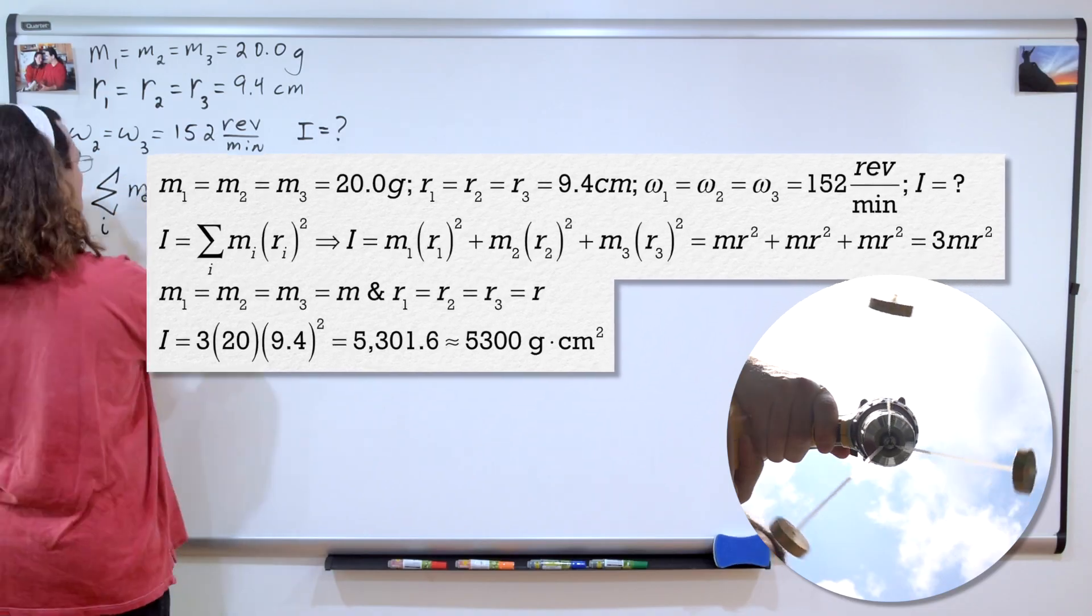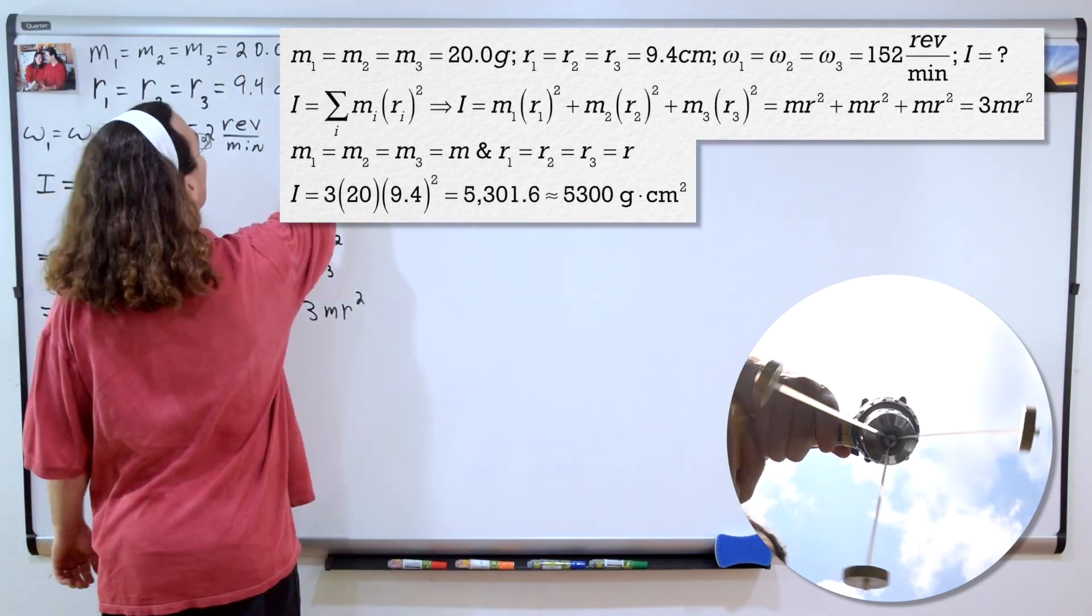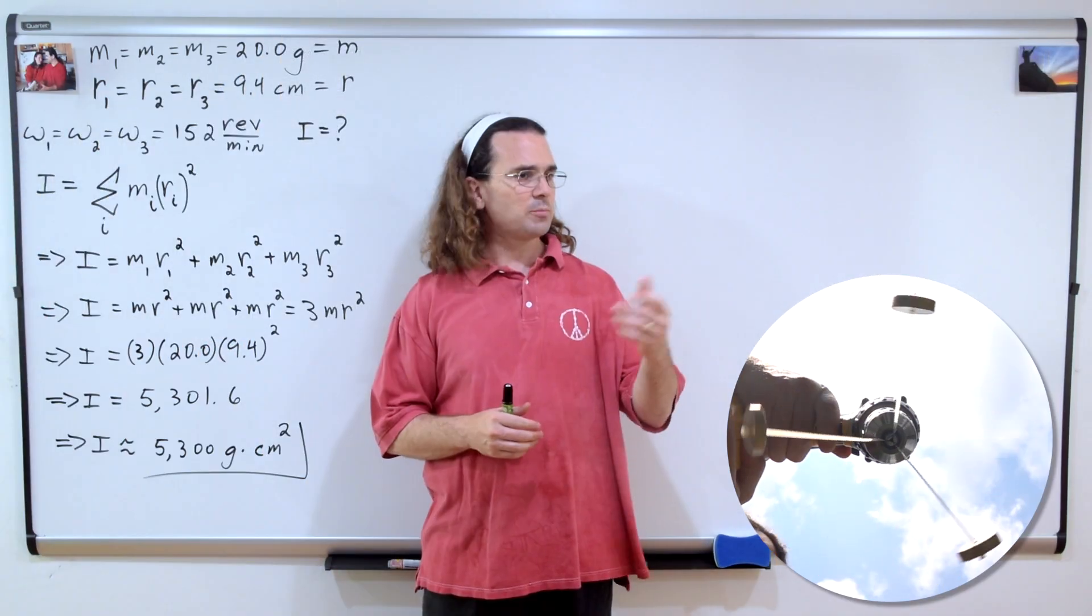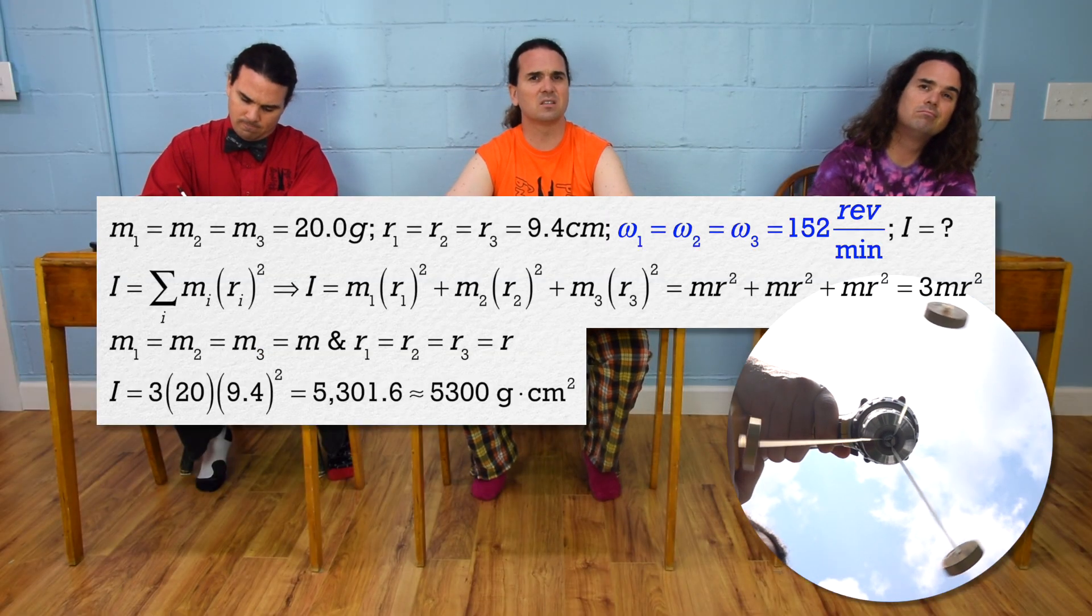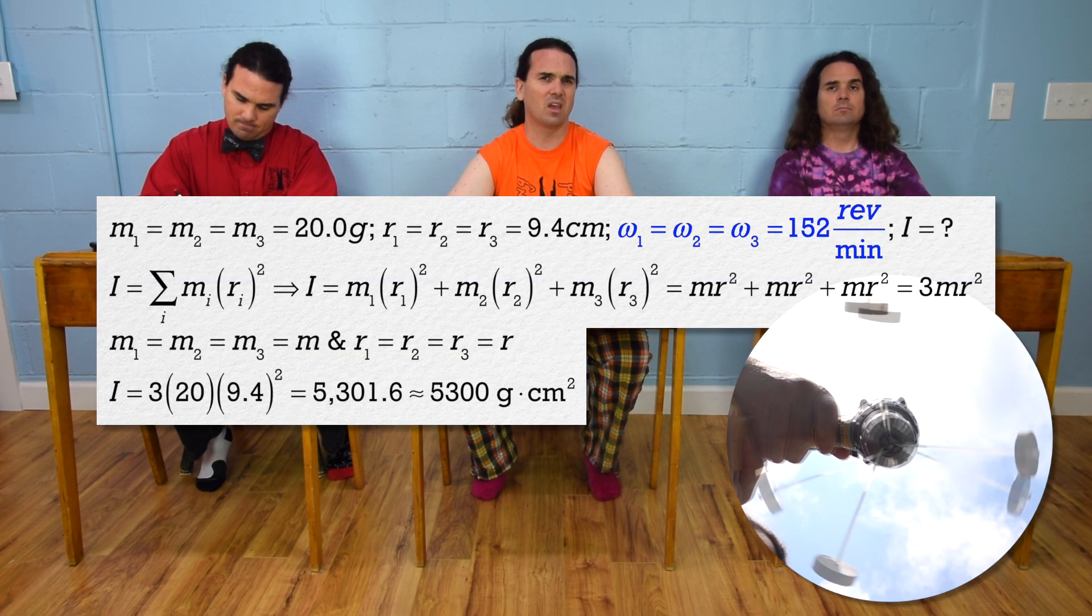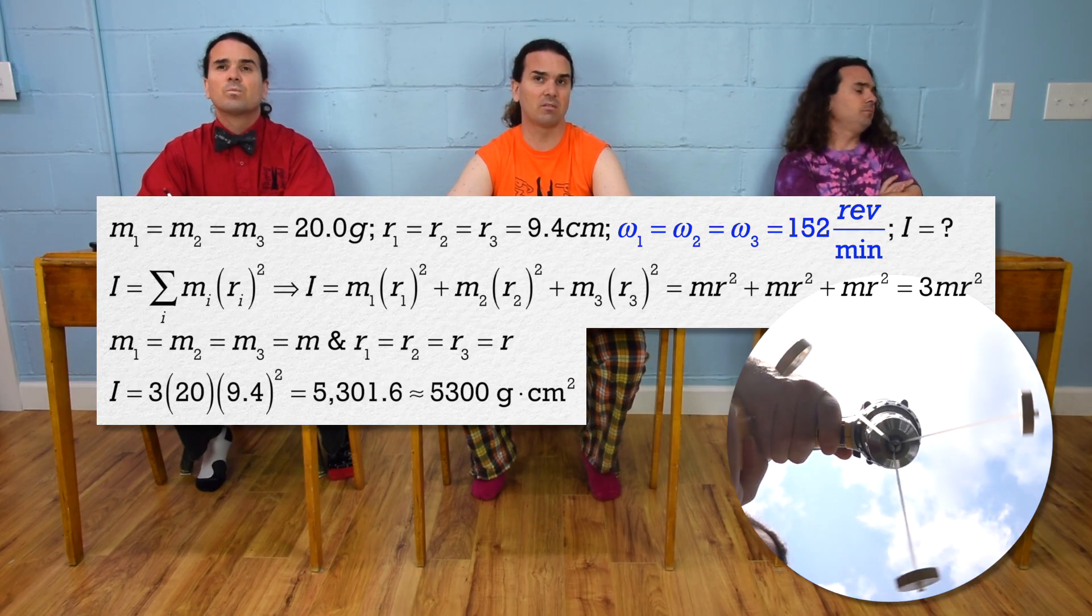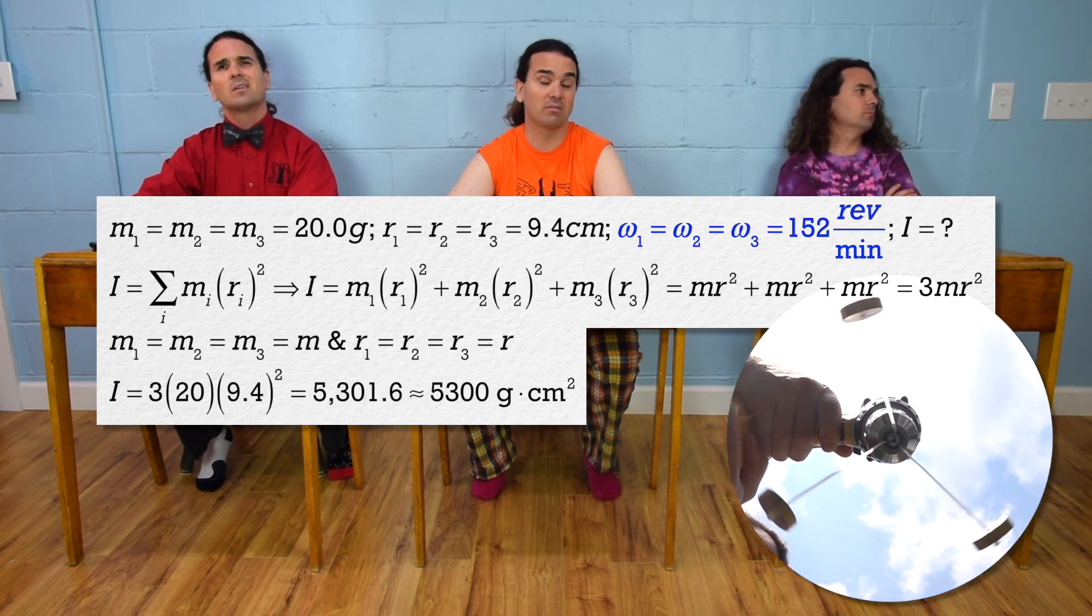Thanks, Billy. Mr. P, yes, Bobby? We did not use the angular velocities of the masses. I don't get it. Why did we not use angular velocity to determine the moment of inertia?